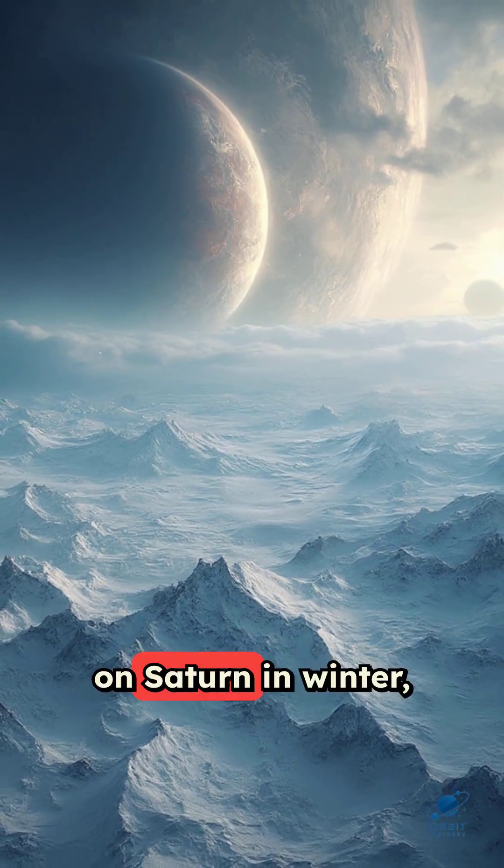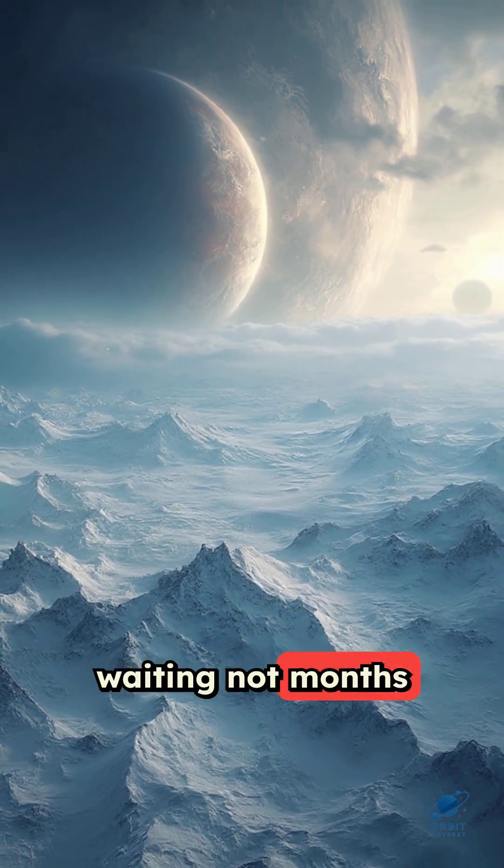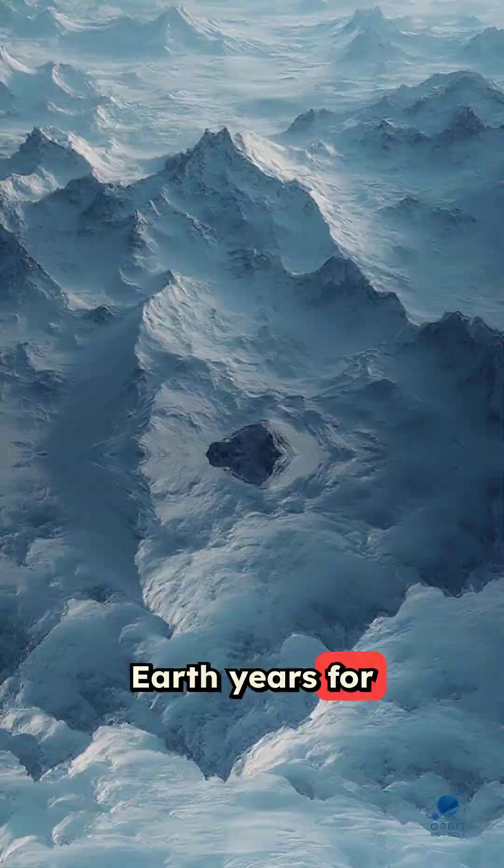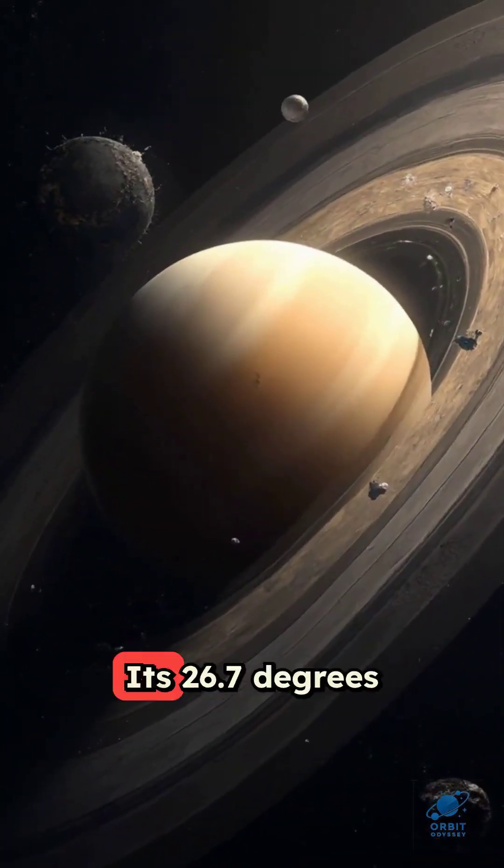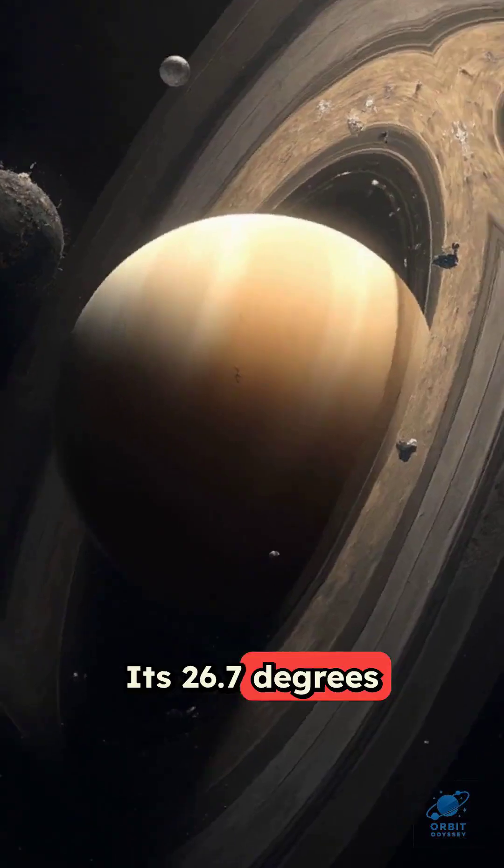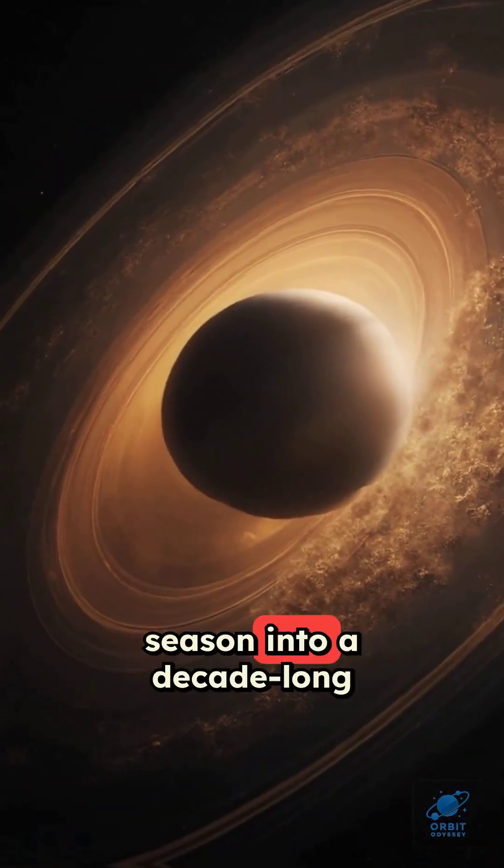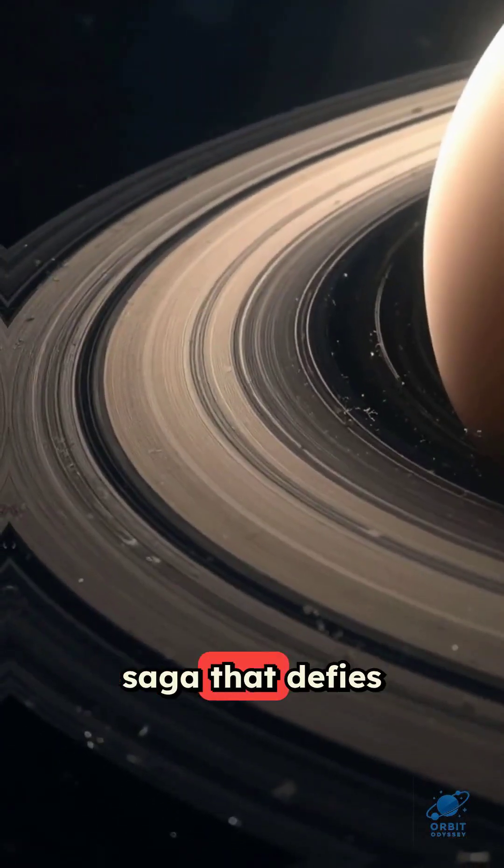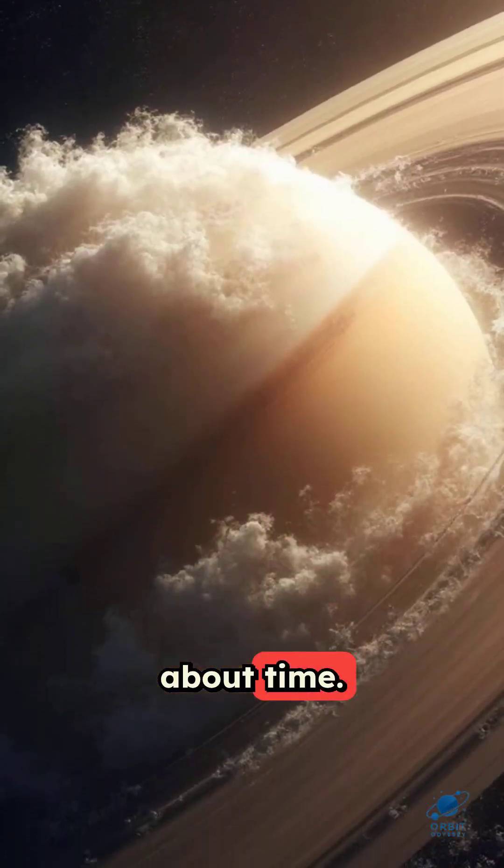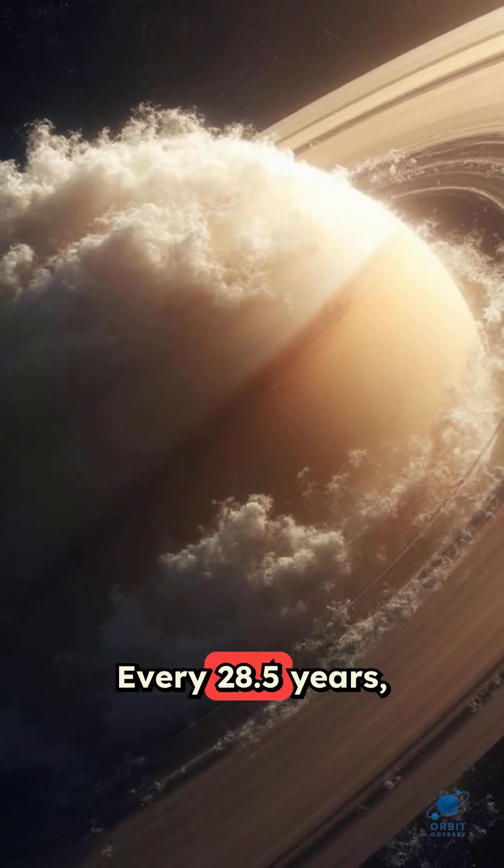Imagine being trapped on Saturn in winter, waiting not months but a full seven Earth years for spring to arrive. Its 26.7 degree tilt stretches each season into a decade-long saga that defies everything we know about time. Every 28.5 years,